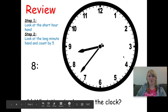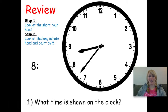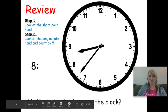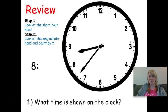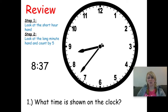Alright, you should have gotten that the hour is eight, because the short hour hand is past the eight but not quite on the nine yet. Step two: I look at the long minute hand and count by fives starting at 12 — five, ten, fifteen, twenty, twenty-five, thirty — and then count by ones: thirty-five, thirty-six, thirty-seven. So you should have written down that the time is eight thirty-seven.